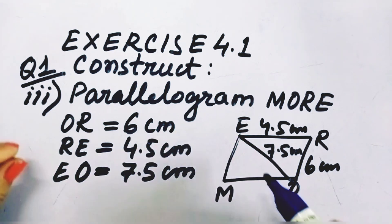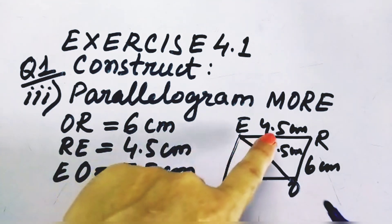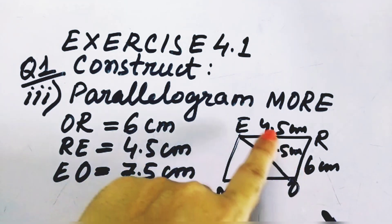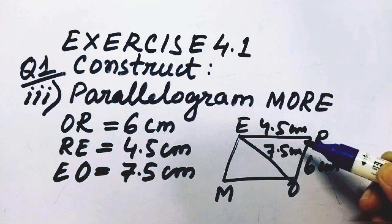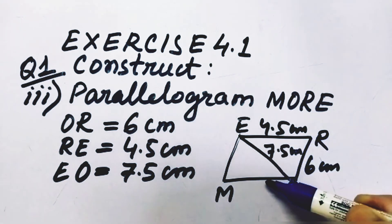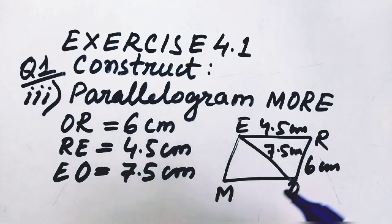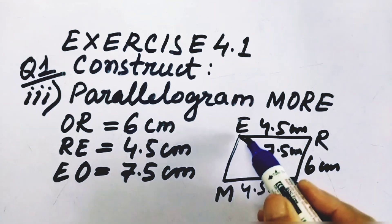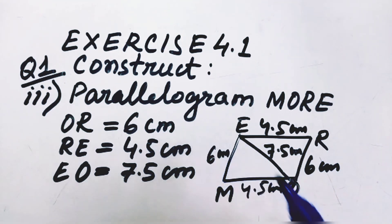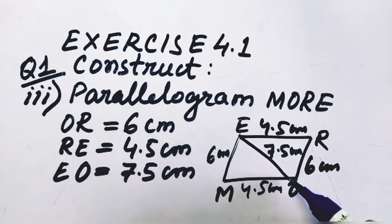Now let us discuss. This is a parallelogram and two adjacent sides are given. We know the property of a parallelogram states that both opposite sides are equal in measure. So ER = MO = 4.5 cm, and OR = 6 cm, which means ME = 6 cm also. With this same criteria — all four sides given and one diagonal given — we can construct this parallelogram.